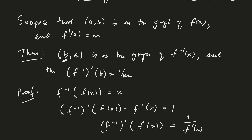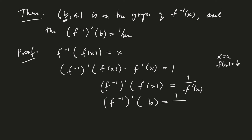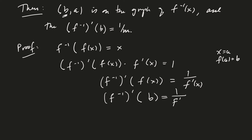In terms of our notation, if x equals a and f(a) equals b, what we're saying is that f⁻¹'(b) equals 1 divided by f'(a). And this is a summary of that result.